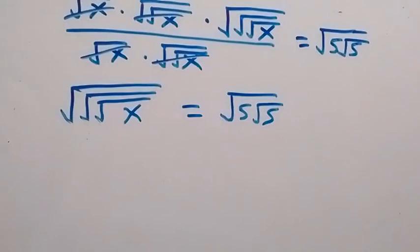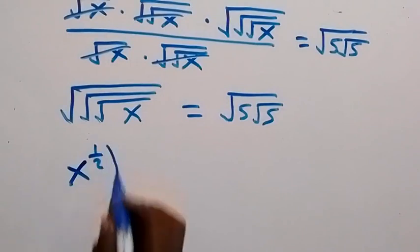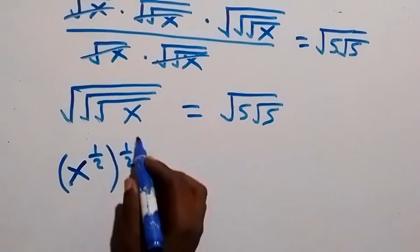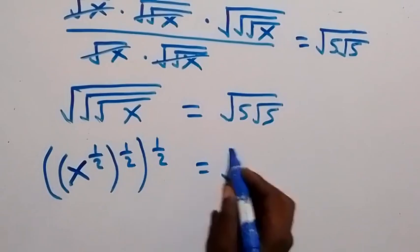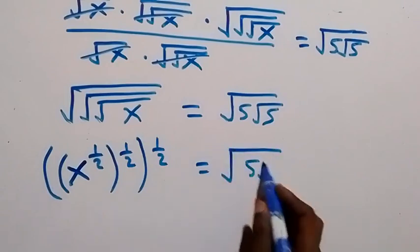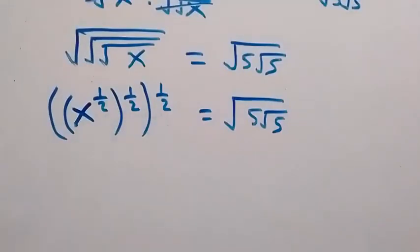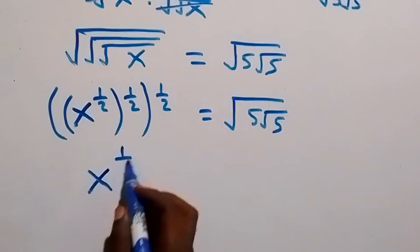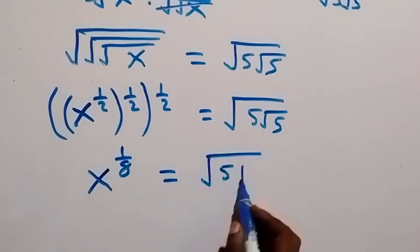From here, this can be written as x raised to the power half, then x raised to the power half again, then x raised to the power half, which equals root 5 times root 5. When we multiply these by the law of indices, this gives us x raised to the power 1 over 8, which equals root 5 times root 5.